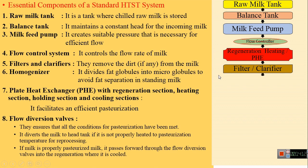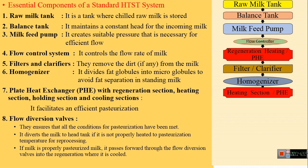Subsequently, the milk enters filters or clarifiers which remove dirt. Then it enters the homogenizer where uniform mixing is carried out. Later, milk enters the heating section — again with plate heat exchangers — where it is heated to the required pasteurization temperature. The milk is then brought into the holding tube, where it is held for a specific time period to complete the process of pasteurization.